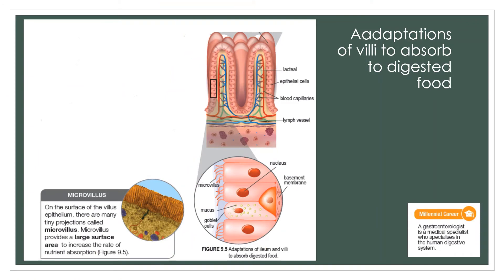Now we look at the surface of the villus itself. On the surface of the villus you can see more small projection structures. These structures are known as microvilli. The function of the microvilli is to provide a large surface area to increase the rate of nutrient absorption. In this picture you can also see the goblet cells — the green color inside the goblet cell is the mucus.